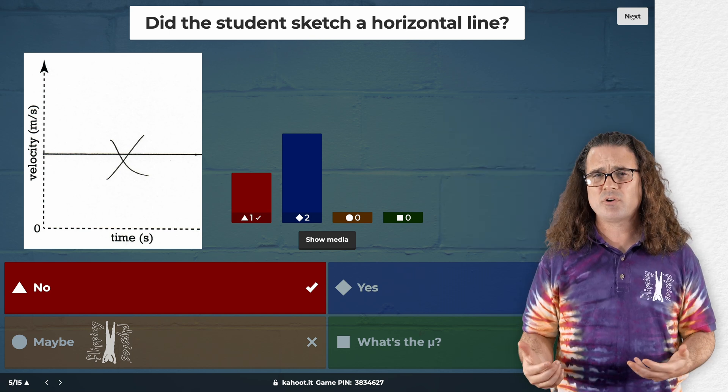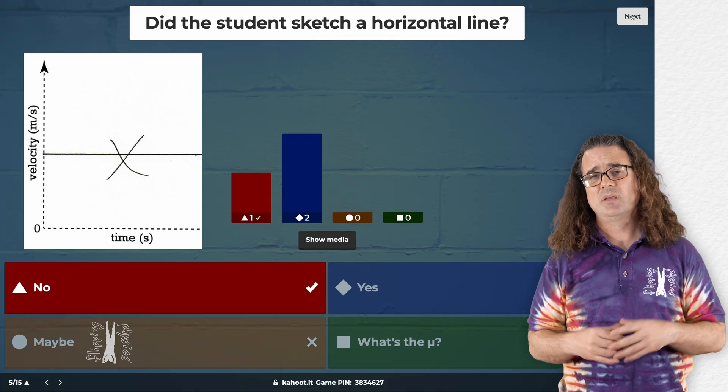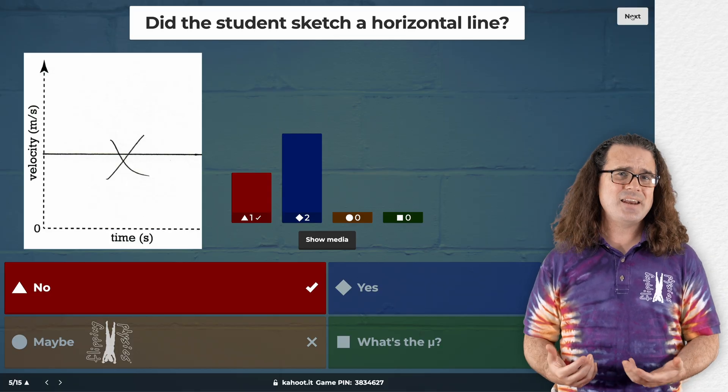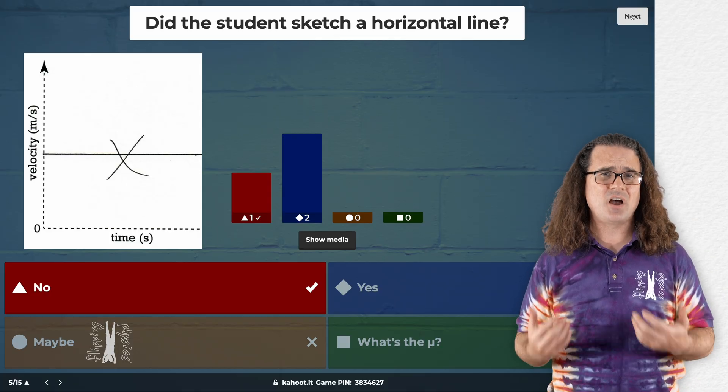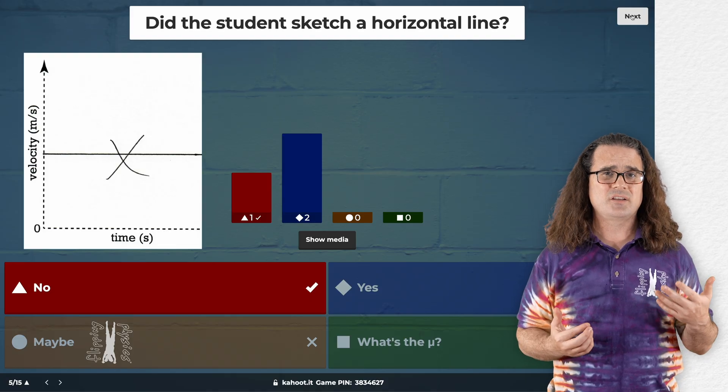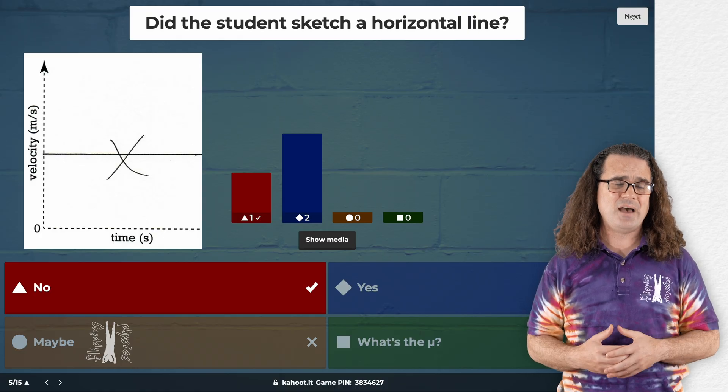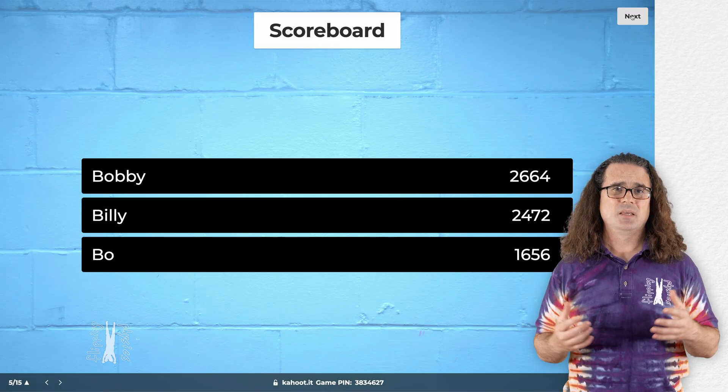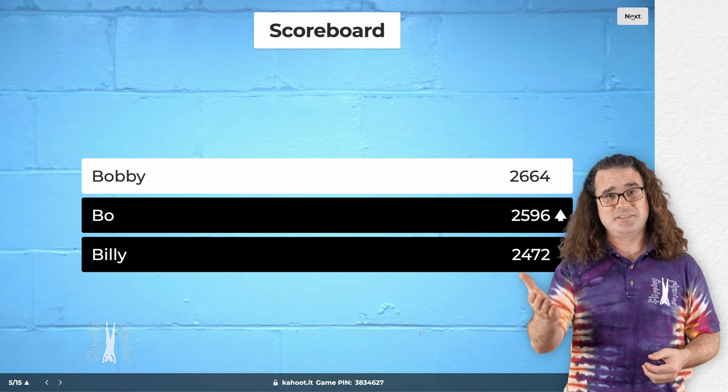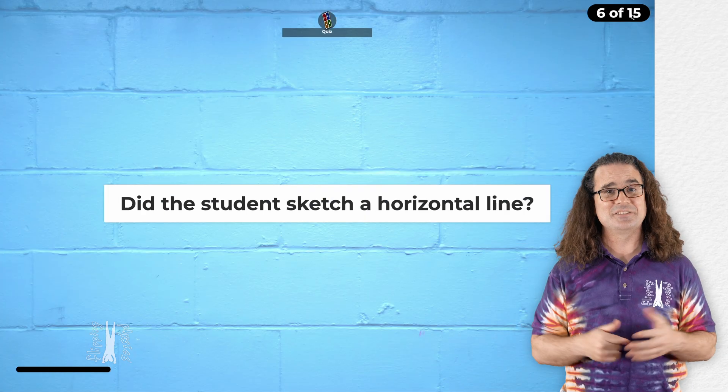And Bobby has taken the lead. I was faster. Oh, all right. And the next question, again, still is, did the student sketch a horizontal line? Right. Unfortunately, no. This student did not sketch a horizontal line. Yes, they did. It's right there.